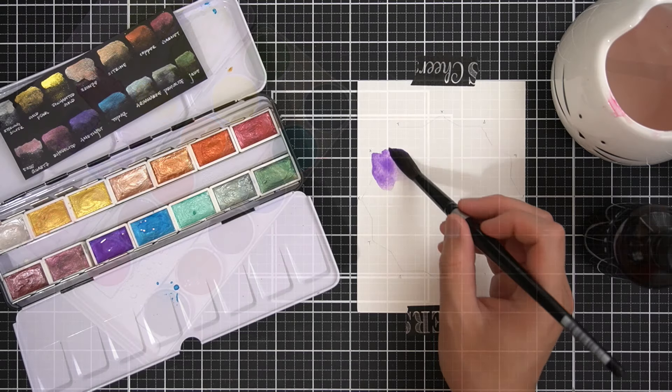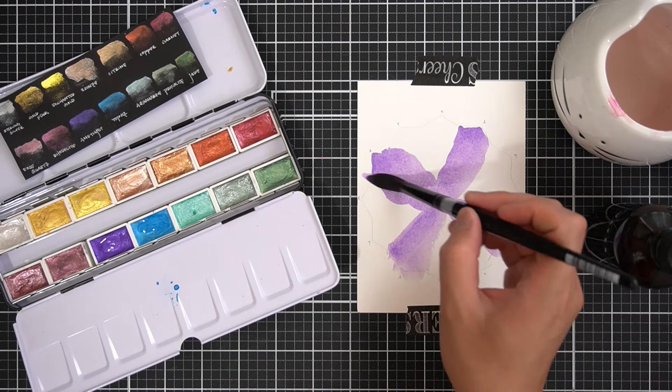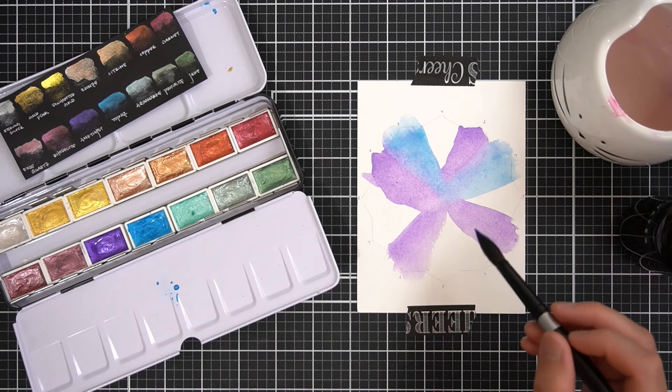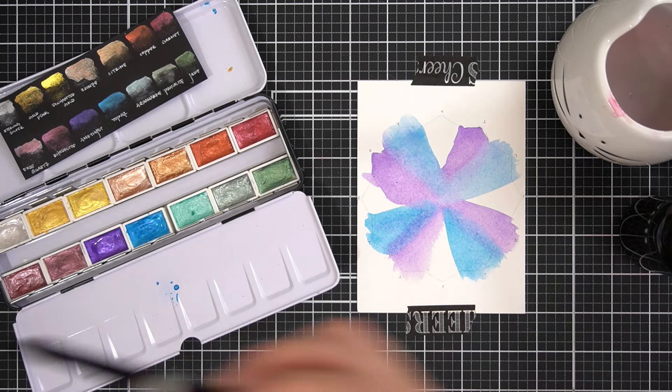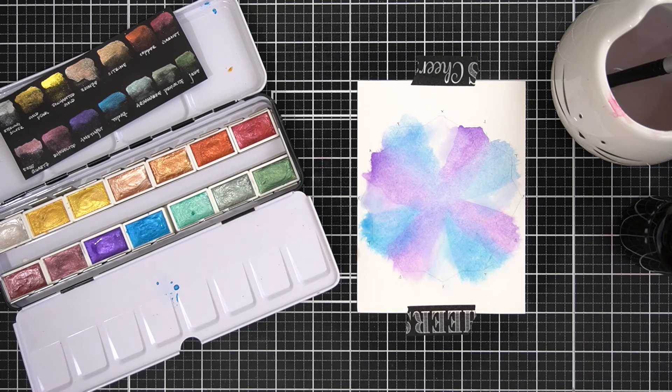On this second variation, I'll use the Altenew 14 metallic watercolor pan set. Like I mentioned earlier, there are 12 points on this die, so I can evenly space two colors and a blank space around the die. That's what I'm doing here: topaz, amethyst, blank, topaz, amethyst, blank, so on and so forth.